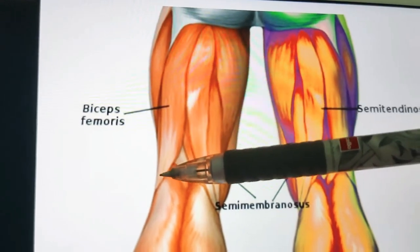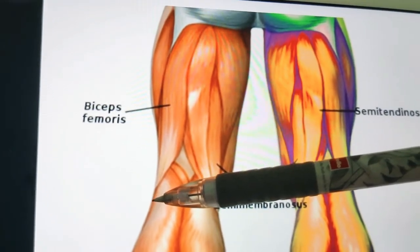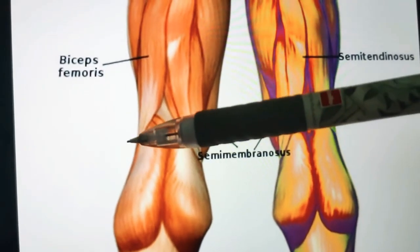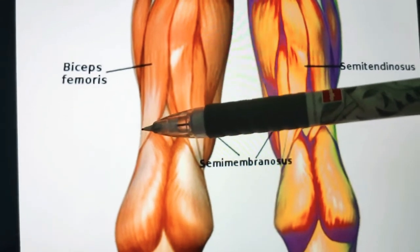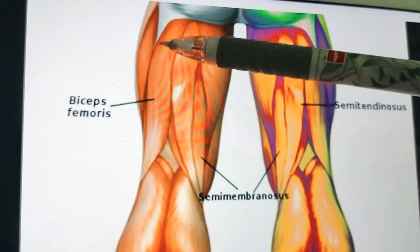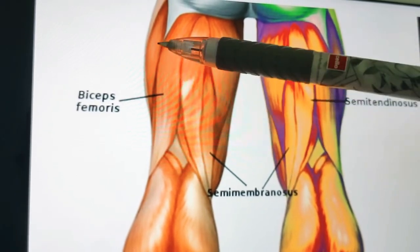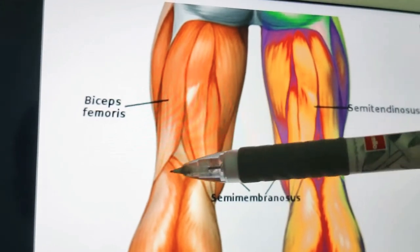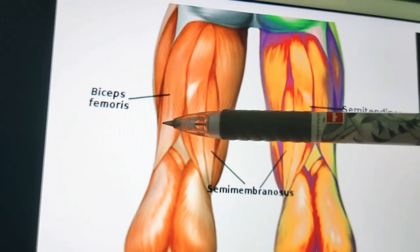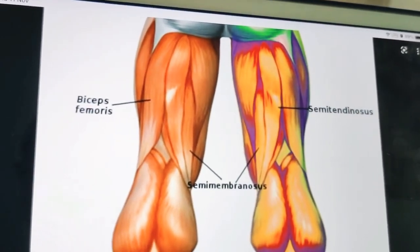Both the long and short heads of biceps femoris are finally inserted into the head of the fibula, in front of the styloid process, folded around and split by the fibular collateral ligament. Regarding nerve supply: the long head is supplied by the tibial part of the sciatic nerve, whereas the short head is supplied by the common peroneal part of the sciatic nerve — both are branches of the sciatic nerve.